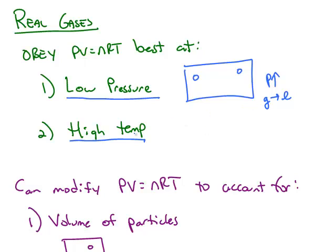And the same thing is true for temperature. When you make the temperature of a gas cold enough, the gas condenses to a liquid. And so in order to avoid that, you would want high temperature, and then PV equals nRT is going to give you the most realistic answer.